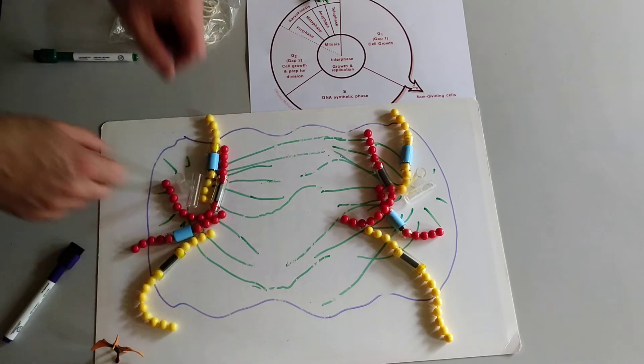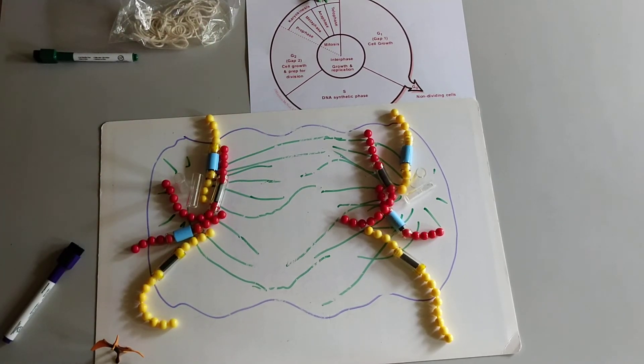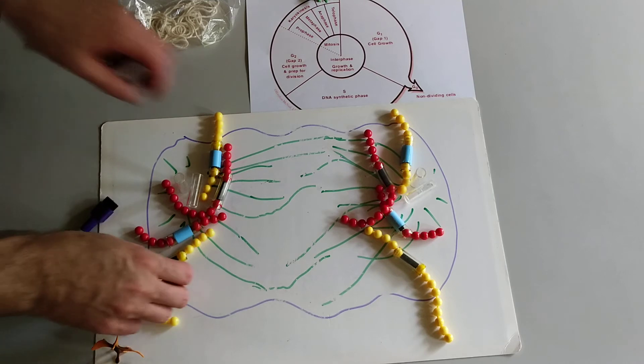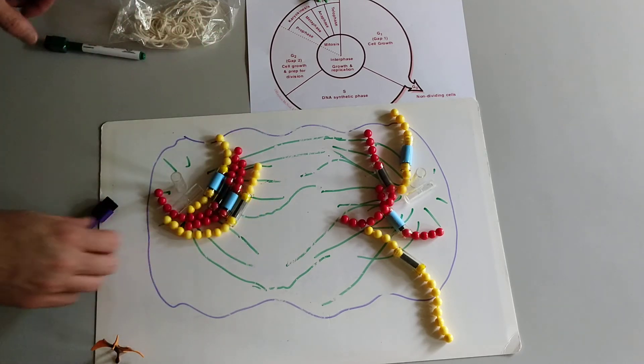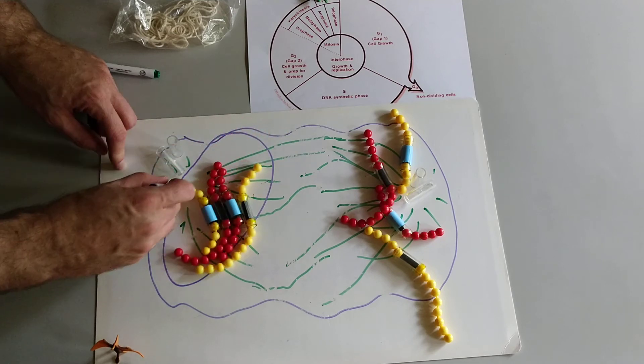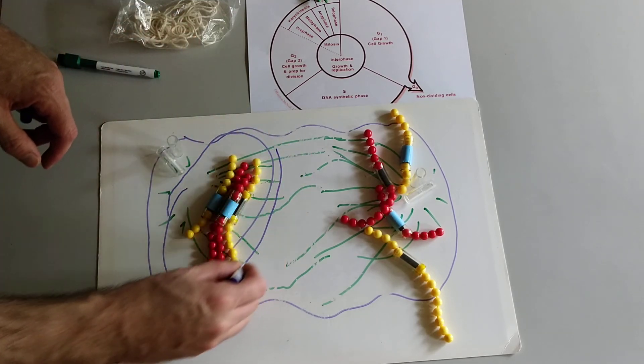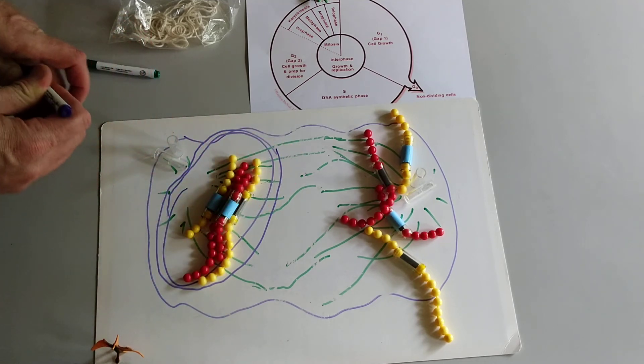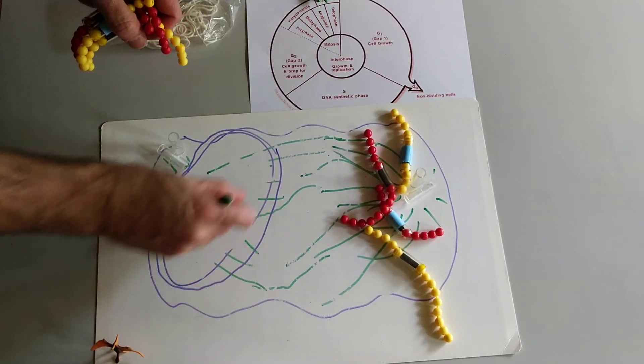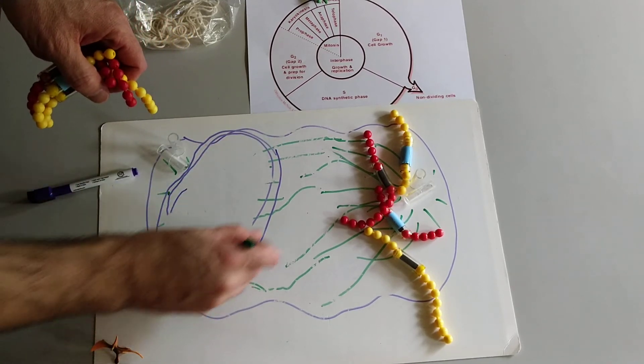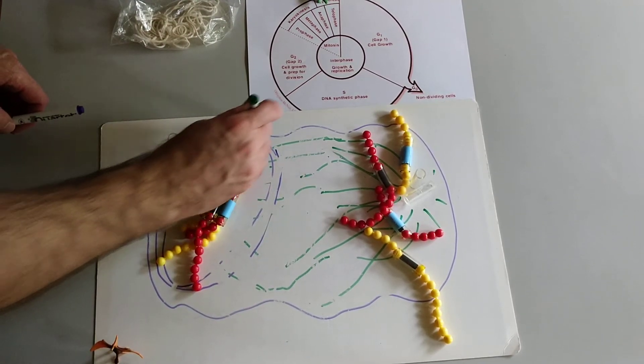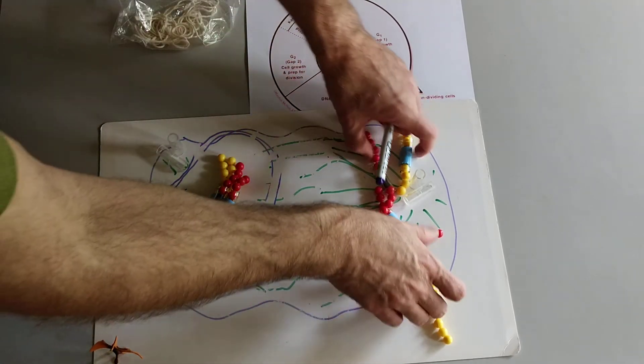When the chromosomes stop moving, that's really when telophase starts. And telophase is when the nuclear membrane reforms around the chromosomes. I'm going to erase those spindle fibers that aren't inside the nuclear membrane. And the nuclear membrane has pores in it. We'll draw those in.